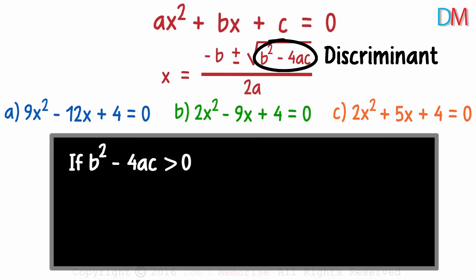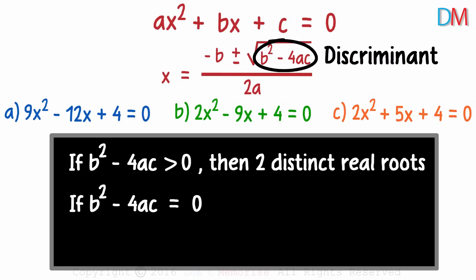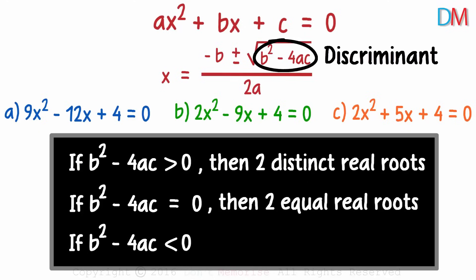If it's greater than zero, then the quadratic equation will have two distinct real roots. If it's equal to zero, then the quadratic equation will have equal real roots. And if it's less than zero, then the quadratic equation will have no real roots.